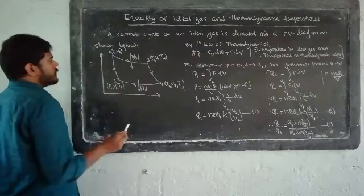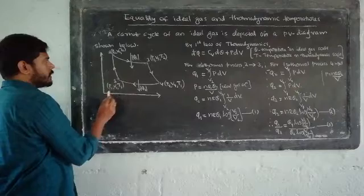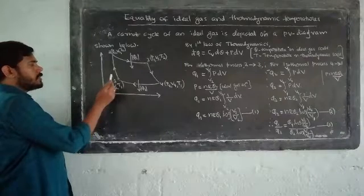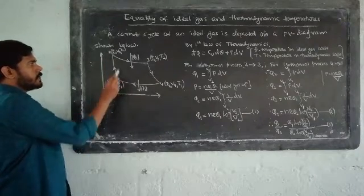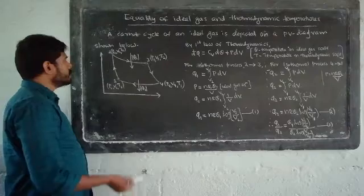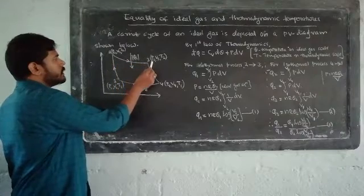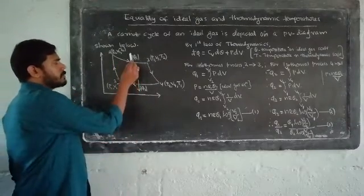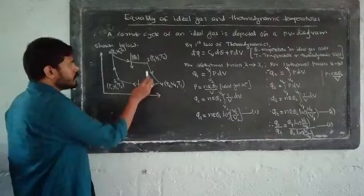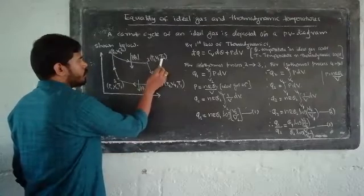The first stage is P1, V1, T1 and the second stage is P2, V2, T2. The pressure, volume, and temperature change. The second stage is an isothermal process leading to P2, V2, T2, then to P3, V3 and T3. The third to fourth state is an adiabatic process where pressure, volume, and temperature change.